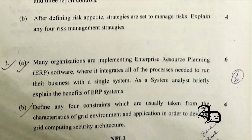The next question was related to defining any 4 constraints usually taken from the characteristics of a grid environment and its applications in order to develop a grid computing security architecture. Here you can write about data management and risk, resource management, and standardization and support for multiple implementations as the answer.